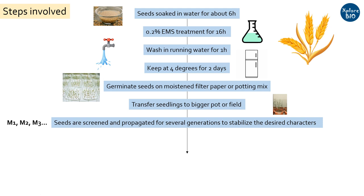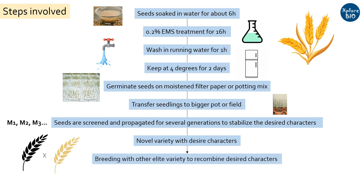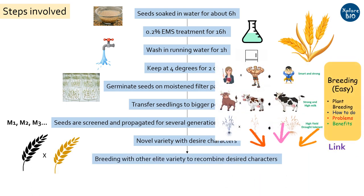Screening is performed in each generation for the desired characters of the mutant. It is essential to perform screening and data collection during each subsequent generation to select only seeds or plants with desired characteristics and stabilize their genetic composition. This is the reason why seeds are propagated for several generations and evaluated for desired traits before releasing as a novel variety. Sometimes a mutant variety is crossed with another variety to combine suitable traits of two varieties into a single one. This is termed as mutational breeding.